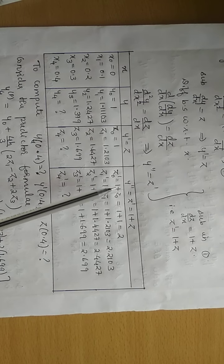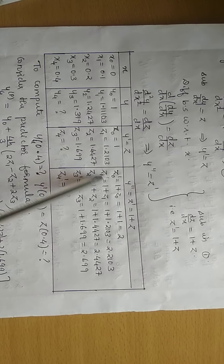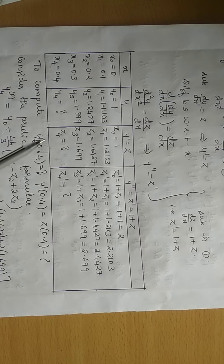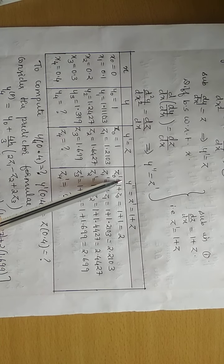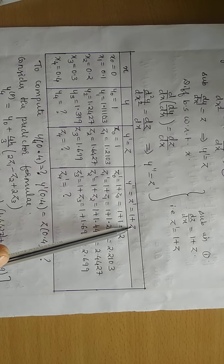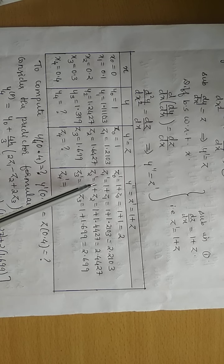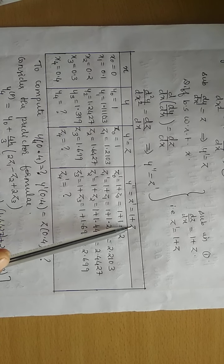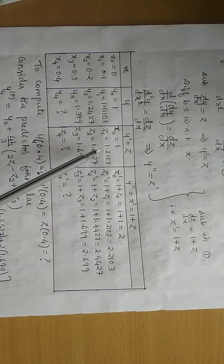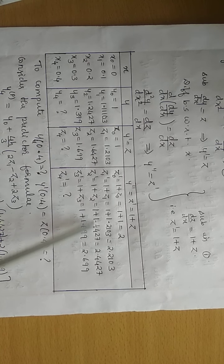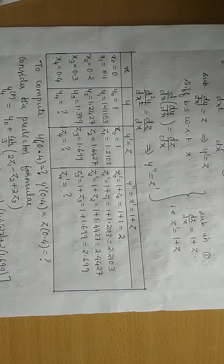The next column computes z₀', z₁', z₂', z₃', and z₄'. To compute z₀' = 1 + z₀ = 1 + 1 = 2. Then z₁' = 1 + z₁, z₂' = 1 + z₂, and z₃' = 1 + z₃. Substitute those corresponding z values and write the results.